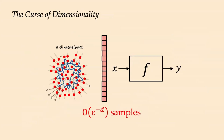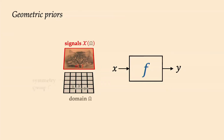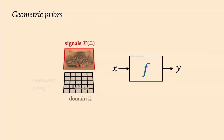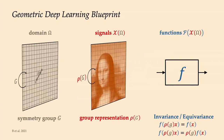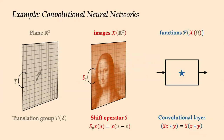Instead of treating inputs as high-dimensional vectors, you can consider them as signals living on a domain — an image or anything else. The domain is equipped with a group of transformations acting on signals through a group representation. In CNNs that is the translation group and the shift operator. Functions taking these signals as input must respect the symmetry through invariance and equivariance. Convolutions can be derived from first principles as linear operations that commute with shifts — translation-equivariant operations.